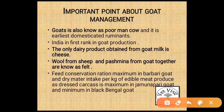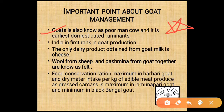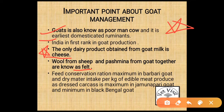Important points for goat management: the goat is known as the 'poor man's cow' and is the earliest domesticated ruminant — this question is frequently asked in exams. India ranks first in goat production. The only dairy product that can be obtained from goat milk is cheese — mark as important. Wool from sheep and Pashmina from goat together are known as 'felt'. Feed conversion ratio is maximum in Barbari goat; dry matter intake per kg of edible meat produced as dressed carcass is maximum in Jamunapuri and minimum in Black Bengal goat.